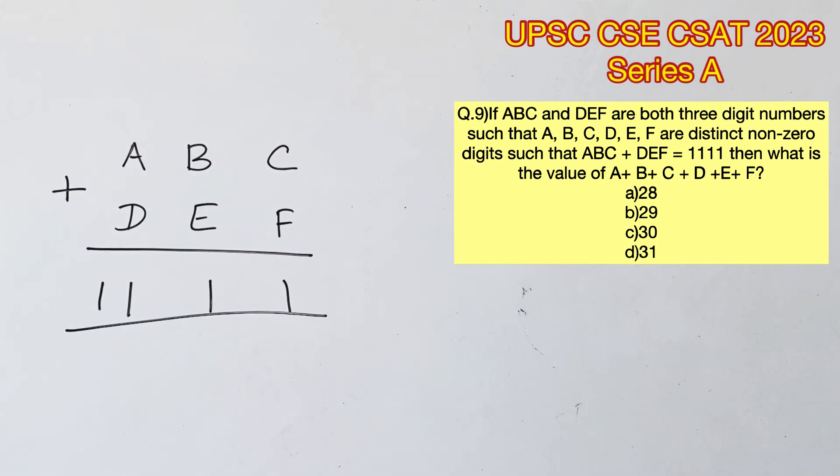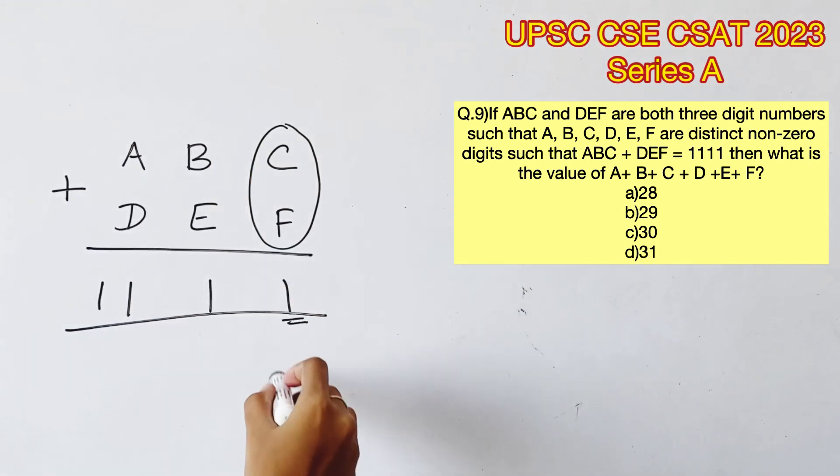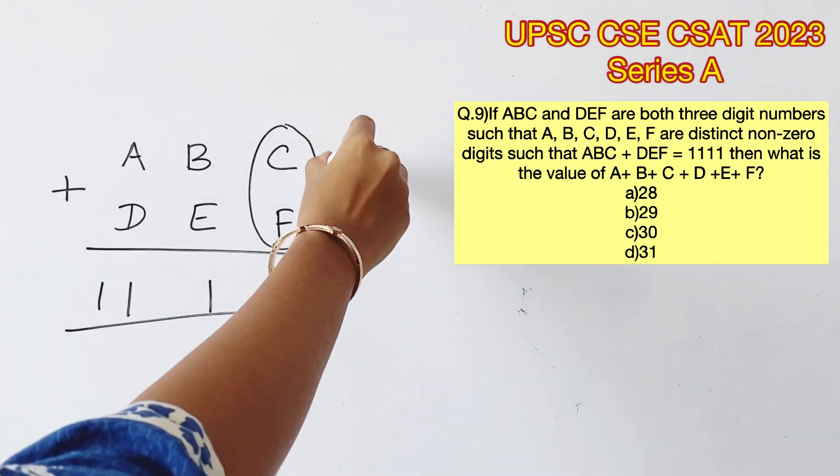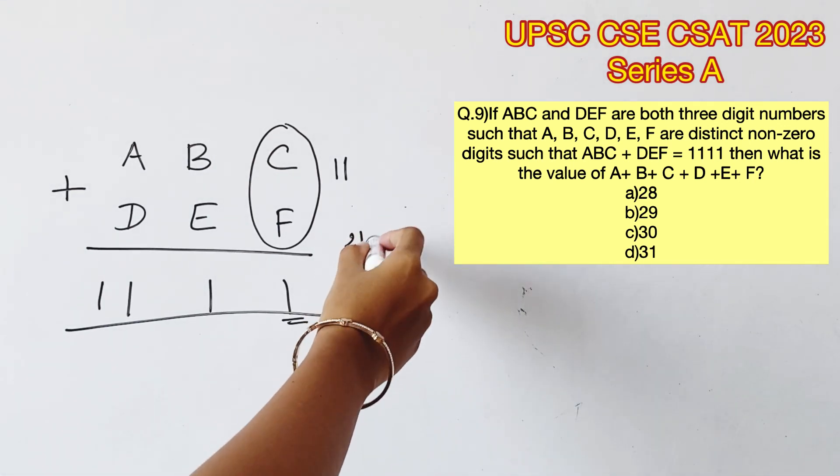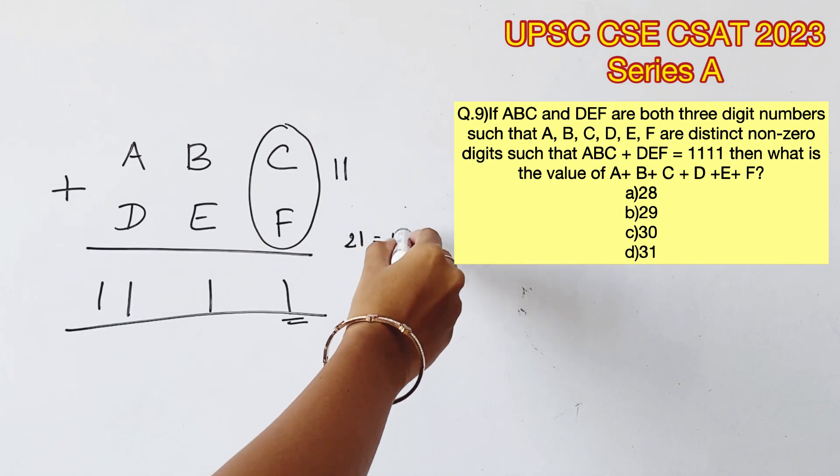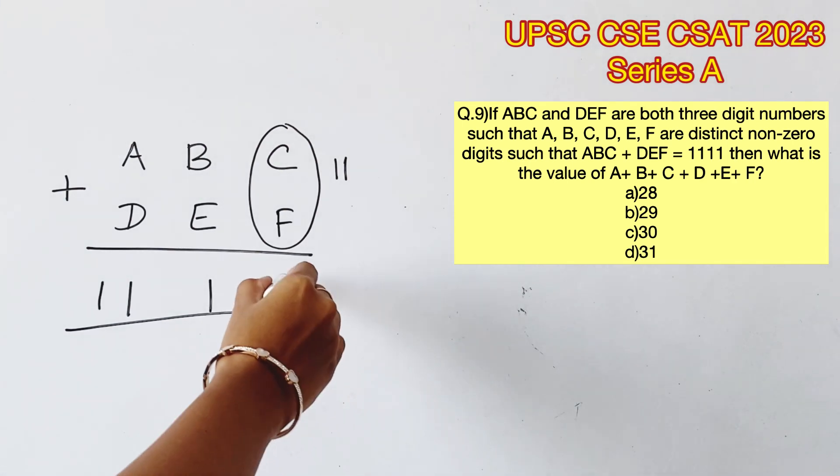It's easy to identify that C and F should give us a sum of 11, because 1 is not possible since these digits are non-zero. We cannot get 21 as well because we are dealing with two single digits, so the highest number possible will be 9 plus 9, that is 18. So we can conclude that C and F should add up to 11. Now we'll have to write 1 here and carry 1 over here.